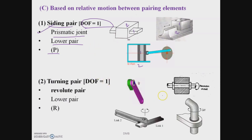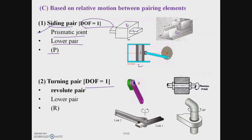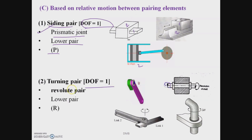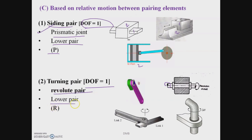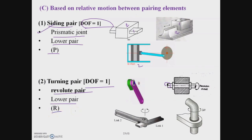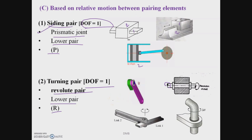A turning pair is formed when the motion between two links is purely turning. Its degree of freedom is also one. Turning pair is also called a revolute pair (letter R), is a lower pair due to surface contact, and is a self-closed pair.